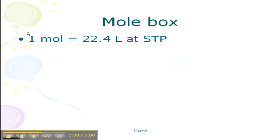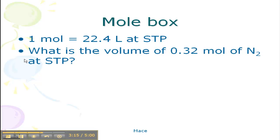So on your mole box, the pink box that we did in class, you had this at the bottom, 22.4 liters. So you might see a problem like this. What is the volume of 0.32 moles of nitrogen at STP, standard temperature and pressure? So this is our conversion factor right here, 1 mole over 22.4 liters.